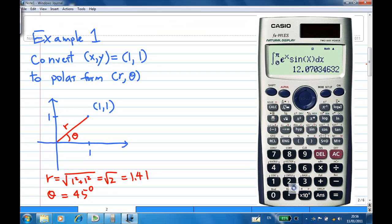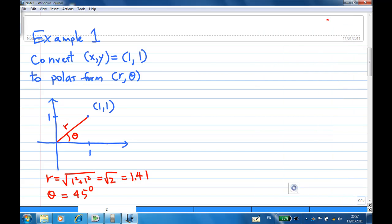Let's look at the first example. Suppose I have a point (x,y) which is (1,1). I want to convert this to polar form (r,θ). The point (1,1) means x equals 1, y equals 1. The distance from the origin is square root of 1 squared plus 1 squared, this is square root of 2 or 1.41. The angle in this case, we can see from the diagram, is 45 degrees. I'm going to show you how to use the calculator to convert the rectangular form to polar form.